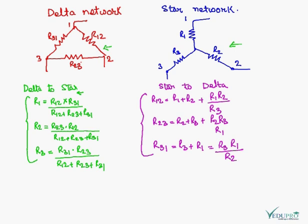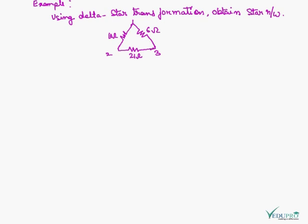To make a simple circuit from a complex circuit, we use these formulas. To understand the concept of star delta and delta star transformation, we will take one example.